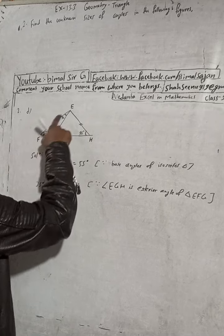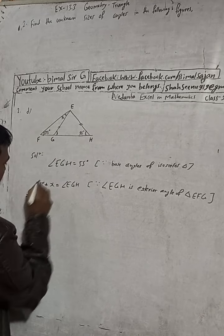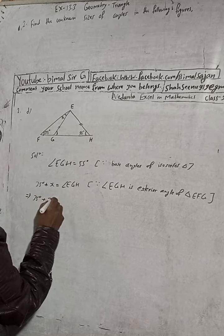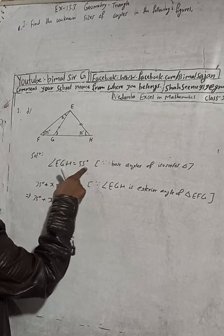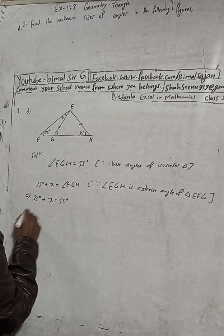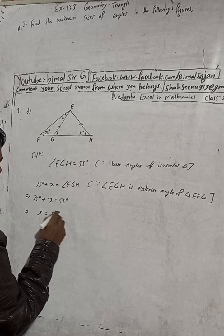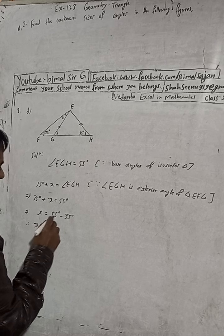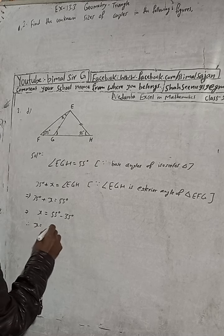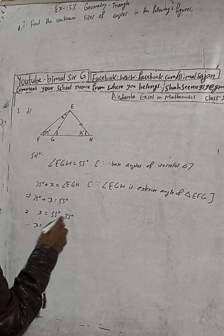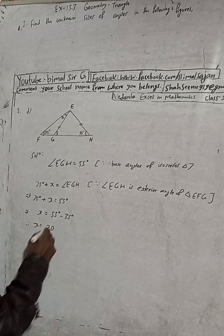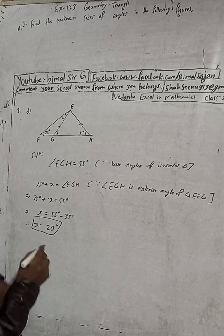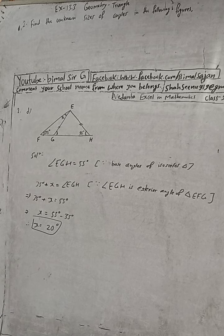So this is 35 degrees plus 25 degrees, which equals EGH, which is 55 degrees. Now, YOX equals 55 degrees minus 35 degrees. Therefore YOX equals 20 degrees. So YOX is equal to 20 degrees — that is the solution of 2d.